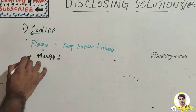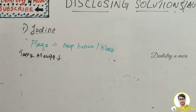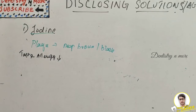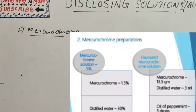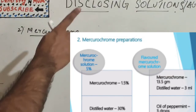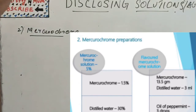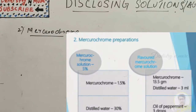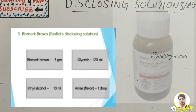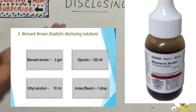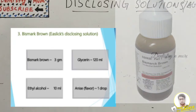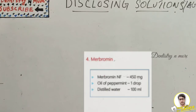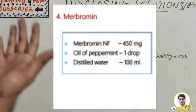Taste is also an issue for some people with iodine. For mercurochrome preparation: a 5% solution contains mercurochrome 1.5% and distilled water 30%; a flavored solution contains mercurochrome 13.5 grams, distilled water 3 ml, and oil of peppermint three drops. Bismarck brown contains 3 grams with ethereal alcohol 10 ml, glycerin 120 ml, and one drop of flavoring.